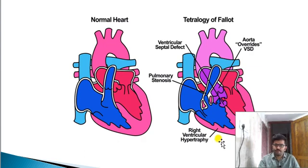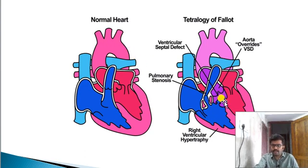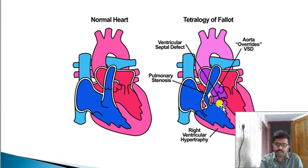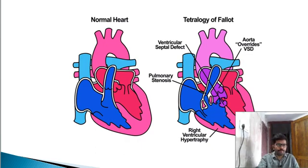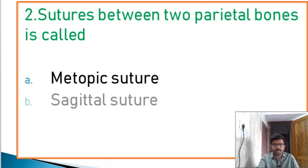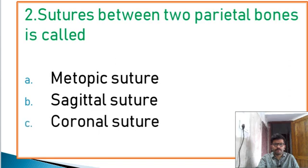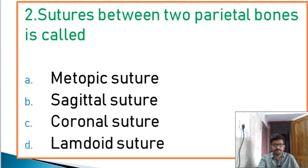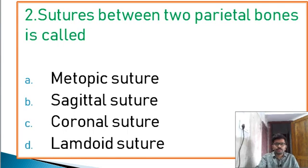Morphine sulphate is also given. In the heart — severe dyspnea, cyanosis, clubbing of fingers, failure to thrive, failure to grow. This is Tetralogy of Fallot and its symptoms.